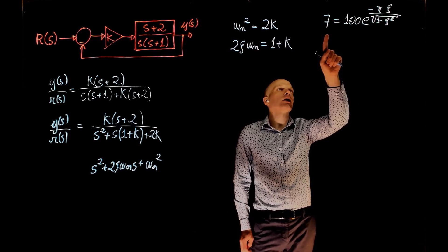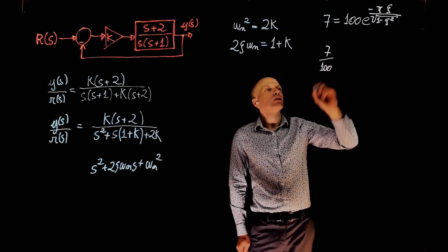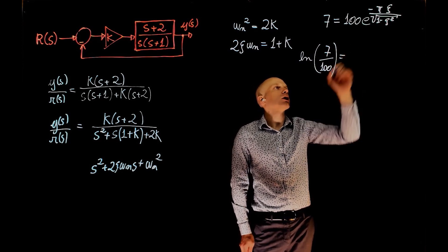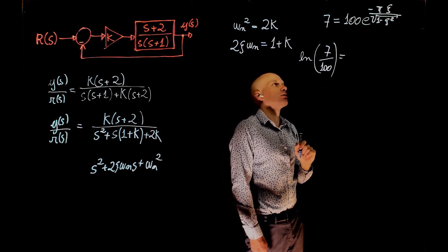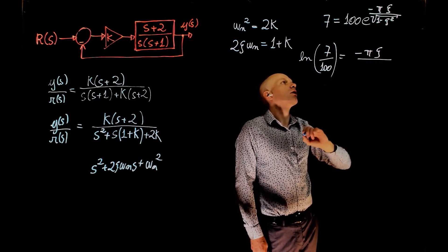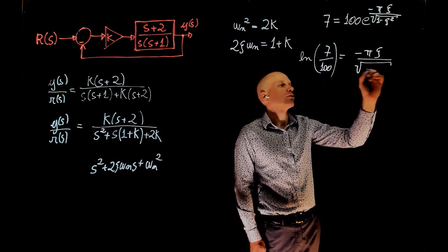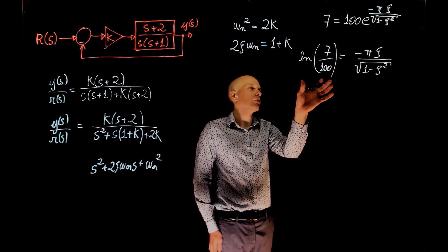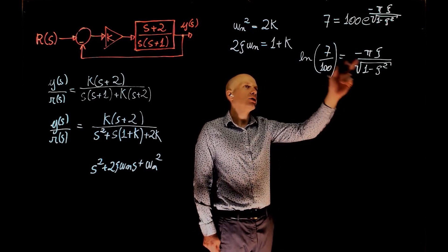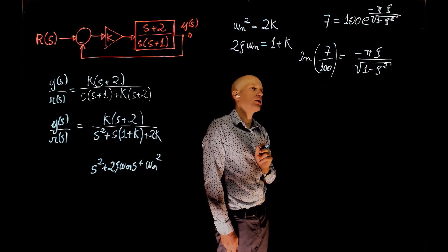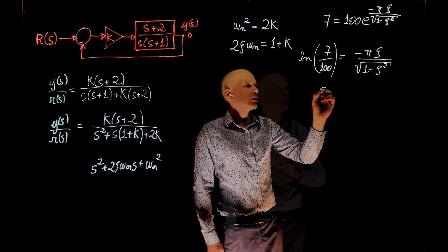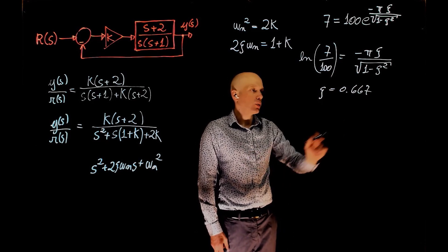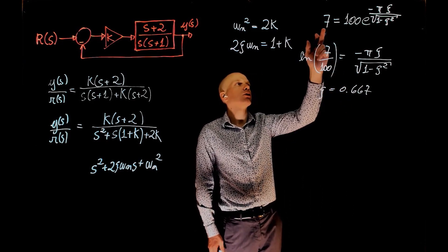To solve this, we divide 7 by 100 and take the natural log of both sides. The natural log cancels the exponential, giving us ln(0.07) = −πζ / √(1 − ζ²). Solving for ζ, we find ζ = 0.667. This is the value of damping ratio that satisfies the expression, meaning when ζ = 0.667, the percent overshoot is exactly 7%. This is step 1.